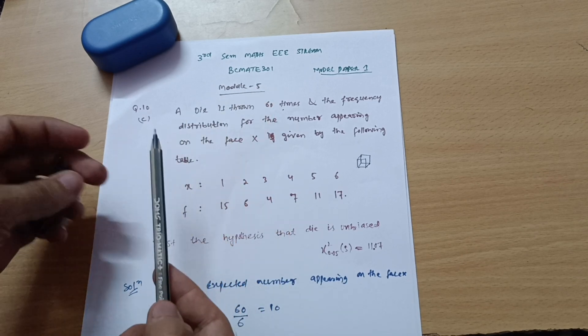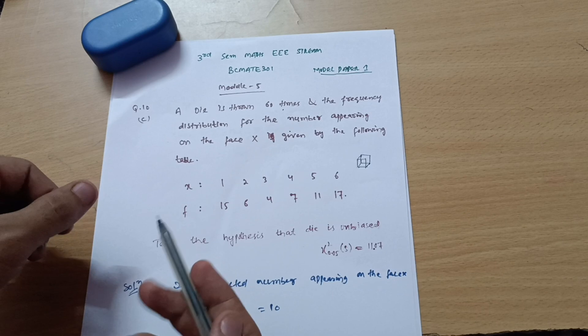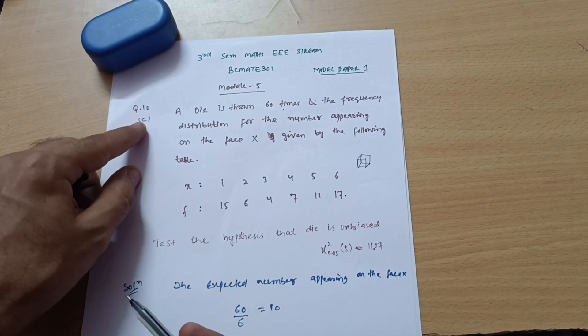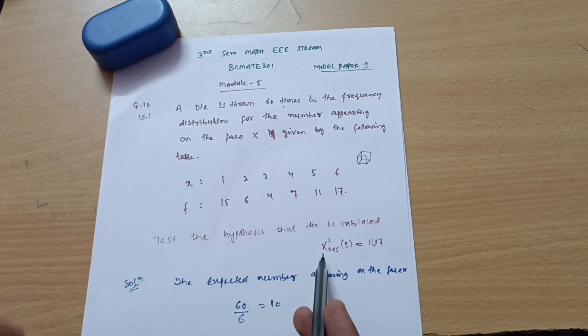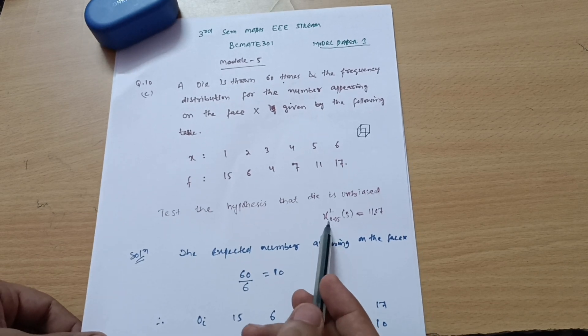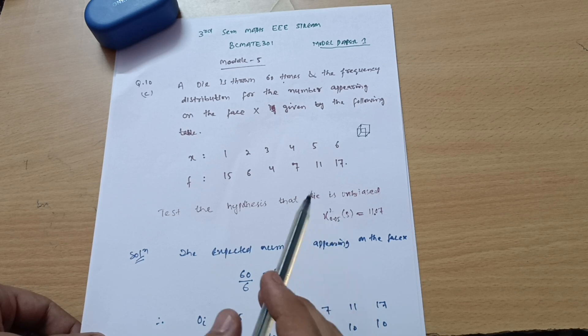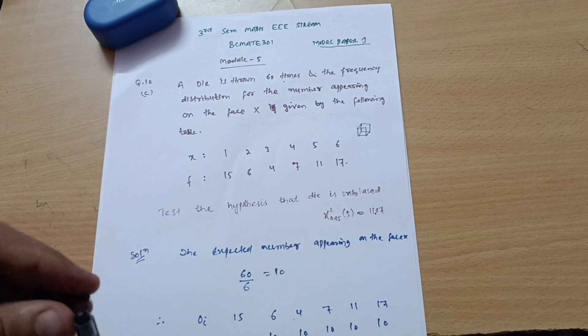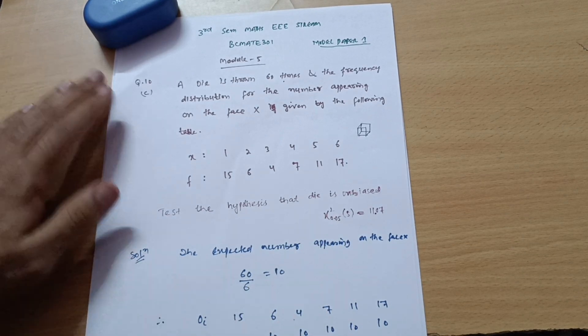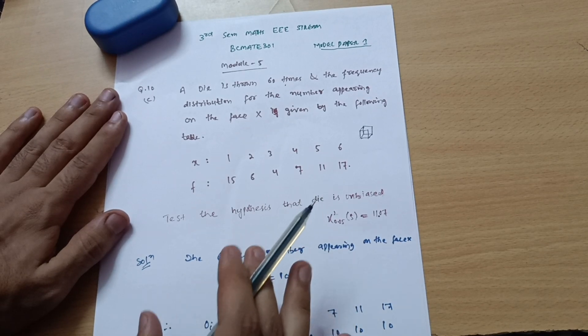In the last video, I discussed the problem on chi-square distribution. Today I will discuss question number 10c which is on the basis of chi-square distribution. Wherever you find this notation chi-square, that is a problem based on chi-square distribution. You should remember you can recognize in this particular manner. There is a procedure which we will see in this particular video.